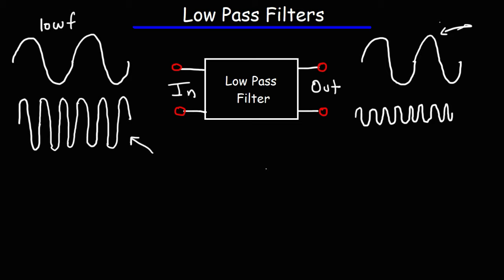Here we have a high-frequency signal, and notice how much the amplitude is reduced. A low-pass filter passes low-frequency signals almost unimpeded, but for high-frequency signals, the amplitude is greatly reduced.